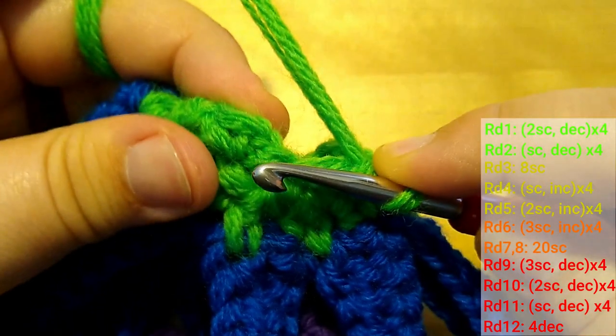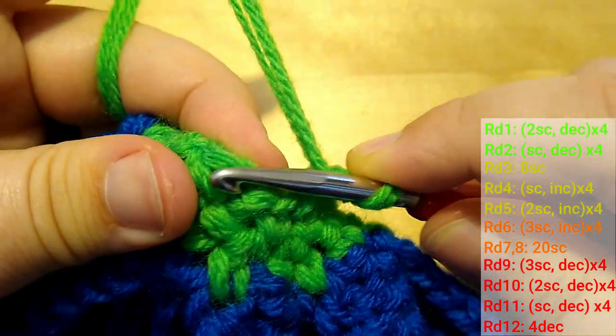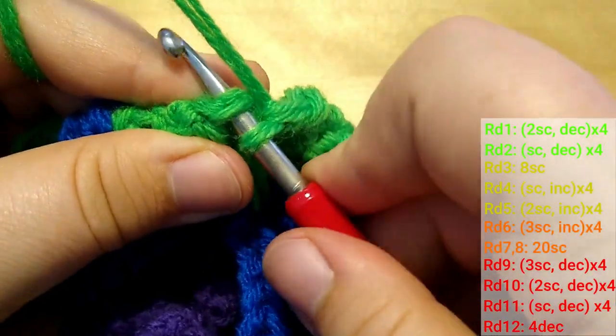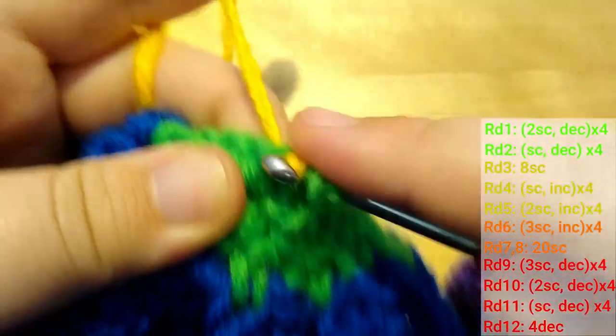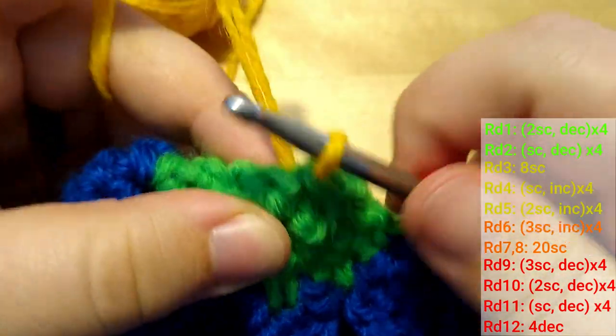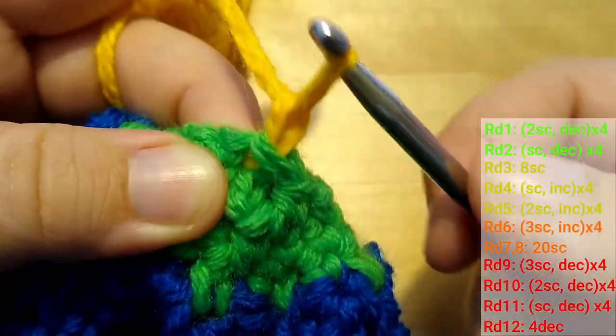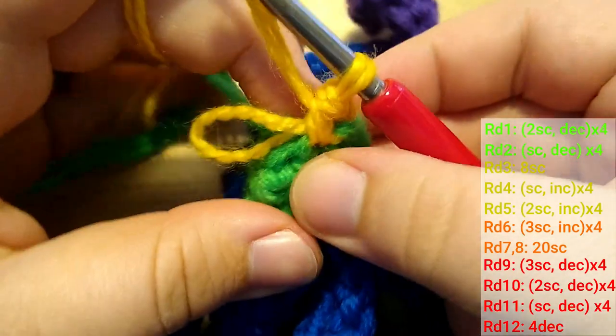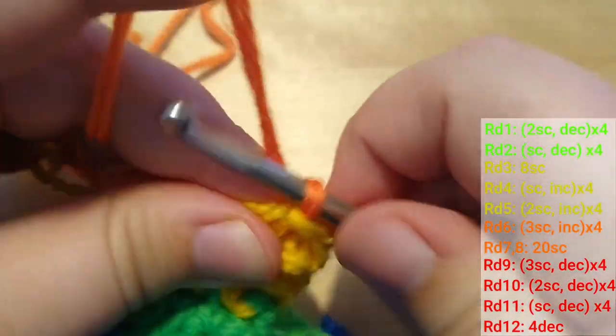At the end of the round, I'm again ignoring the previous slip stitch and chain and hooking the first single crochet, but because the next round will be yellow, I'm taking my doubled up yellow yarn to make the slip stitch and chain, but I just keep on following the pattern, switching to orange after 3 more rounds.